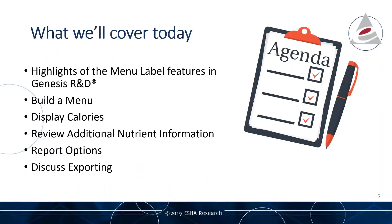What are we going to look at today? Highlights on the menu label features in Genesis R&D. This is a functional overview of the menu label, looking at the application and what it can do for you: building a menu, displaying calories, reviewing additional nutrient options, reporting, and looking at some of the exporting options, whether from inside the program or the utilities we have as well.